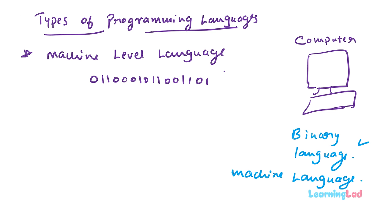Consider writing a program in machine level language with 1000 lines — all your instructions consist of 0s and 1s. First, it is difficult to write the program, and if you make mistakes it is difficult to spot them. Because of all this, a normal person can't really learn programming easily in machine level language.